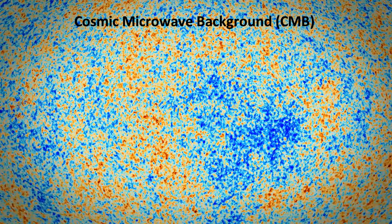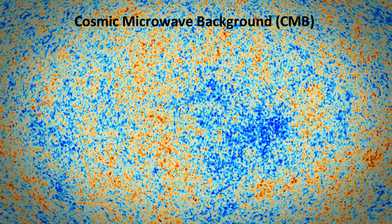This leads us to the question: if we look out as far as possible, what will we see? Well, we would see a remarkably uniform glow of low level radiation in all directions. This is called the cosmic microwave background, or CMB. It is the oldest light in the universe, and it can tell us a lot about its early history.